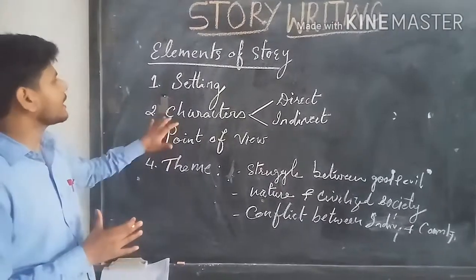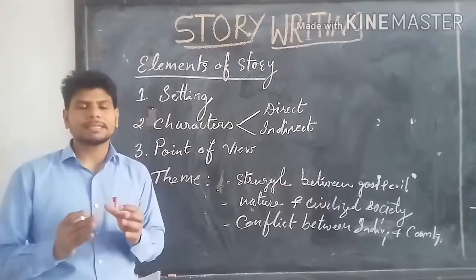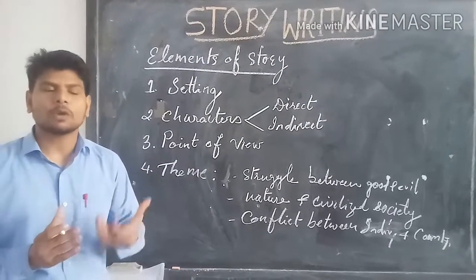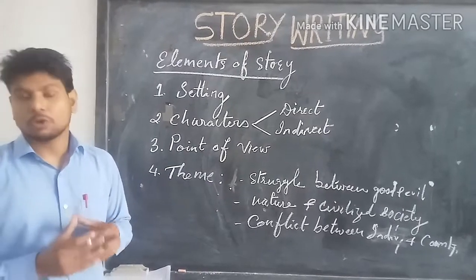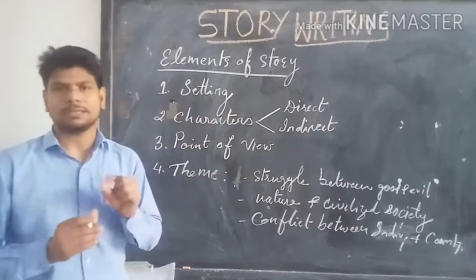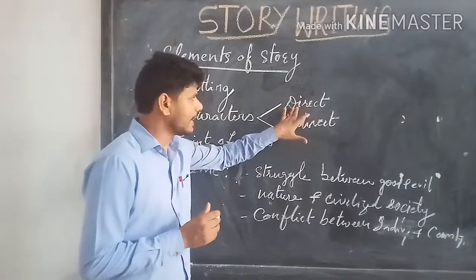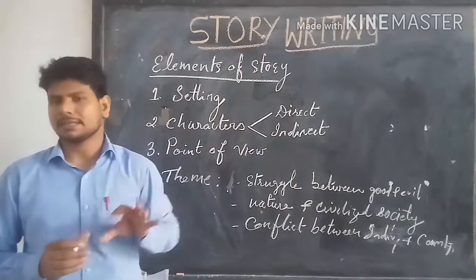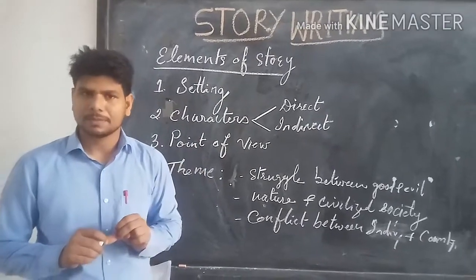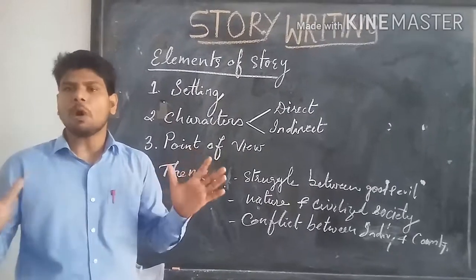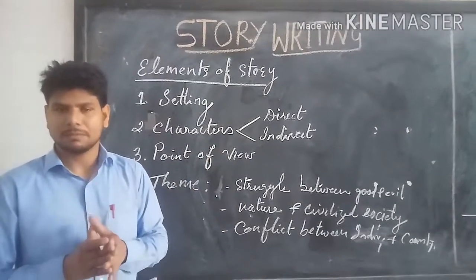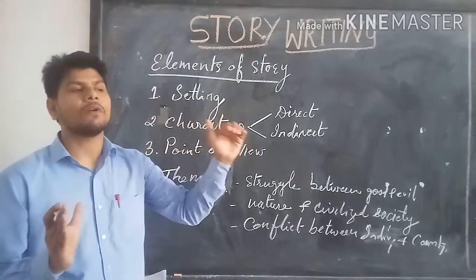The second element is character. Character is the means through which the author communicates to us — his ideas and his opinions are communicated through the characters. Characterization is the process by which the author tries to communicate to its audience. There are basically two types of characters: direct characters and indirect characters. Direct characterization is when the author introduces the character directly to the audience — for example, 'there was a small rabbit in the jungle.' The small rabbit is direct characterization because the author has directly informed us.